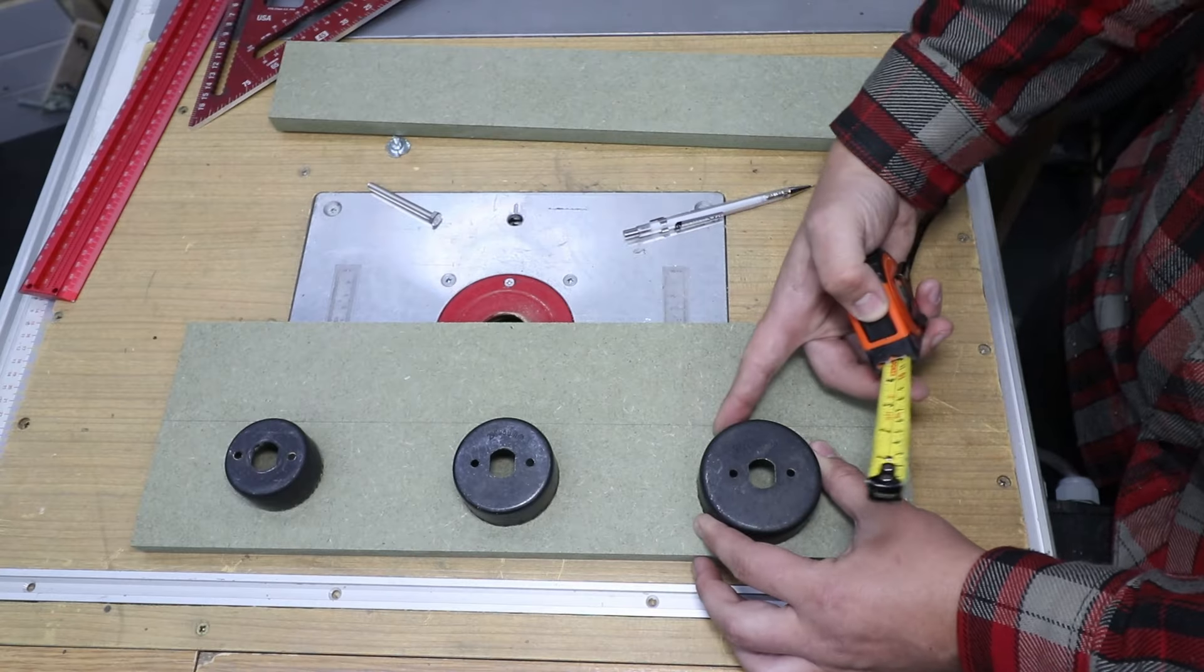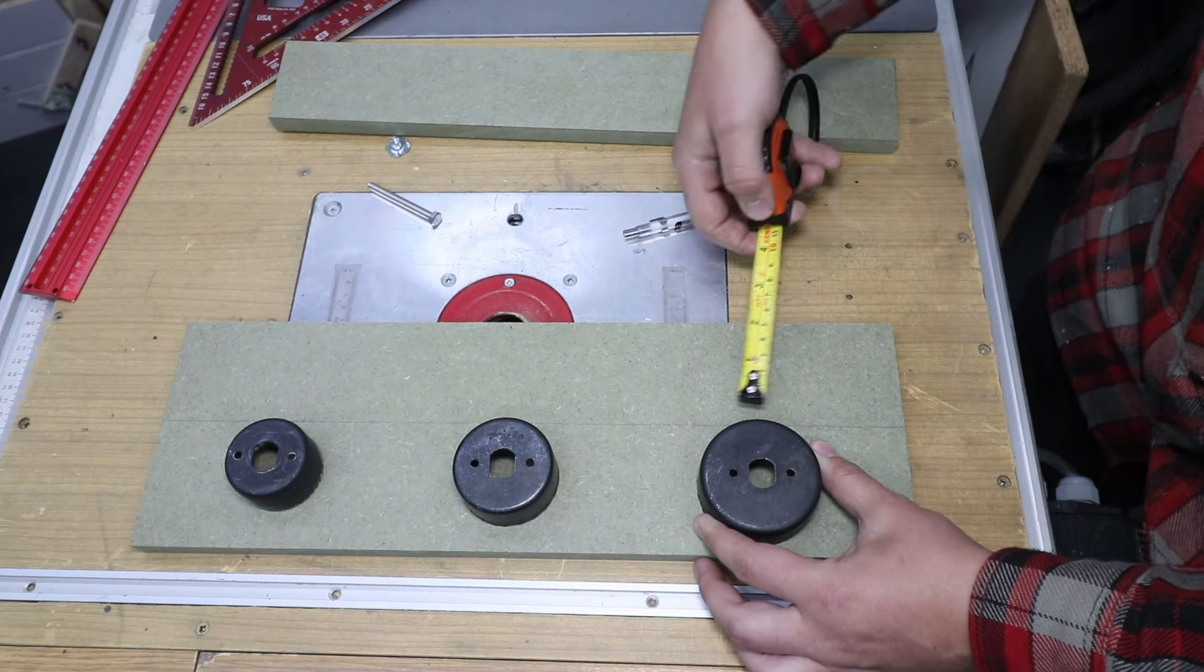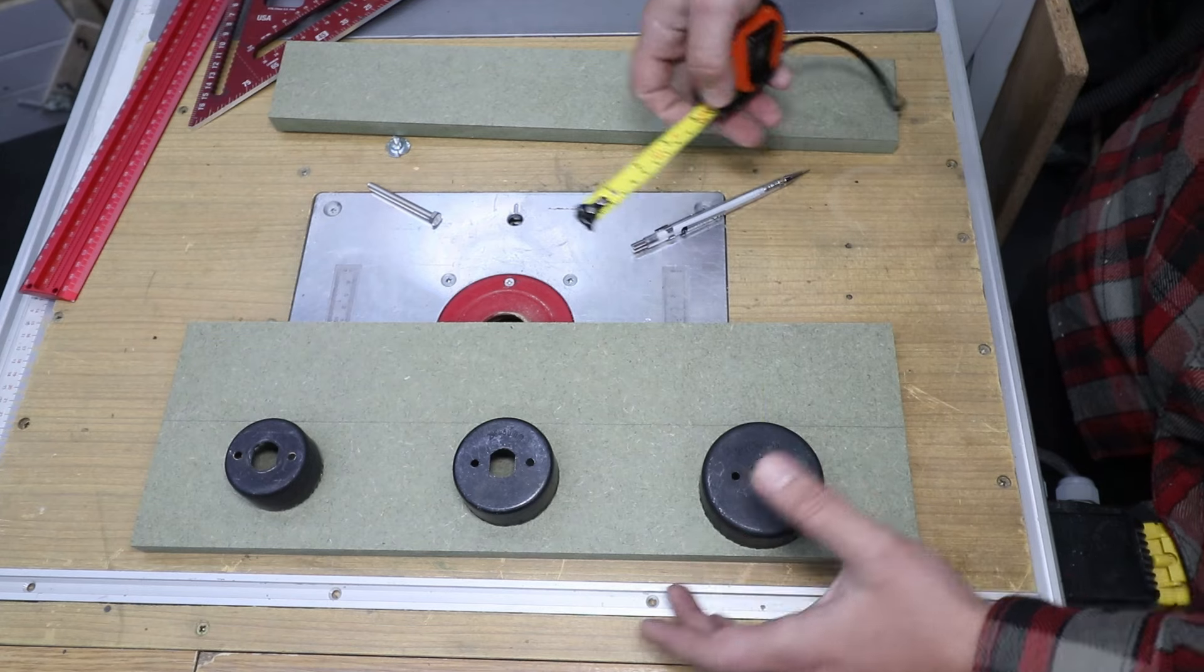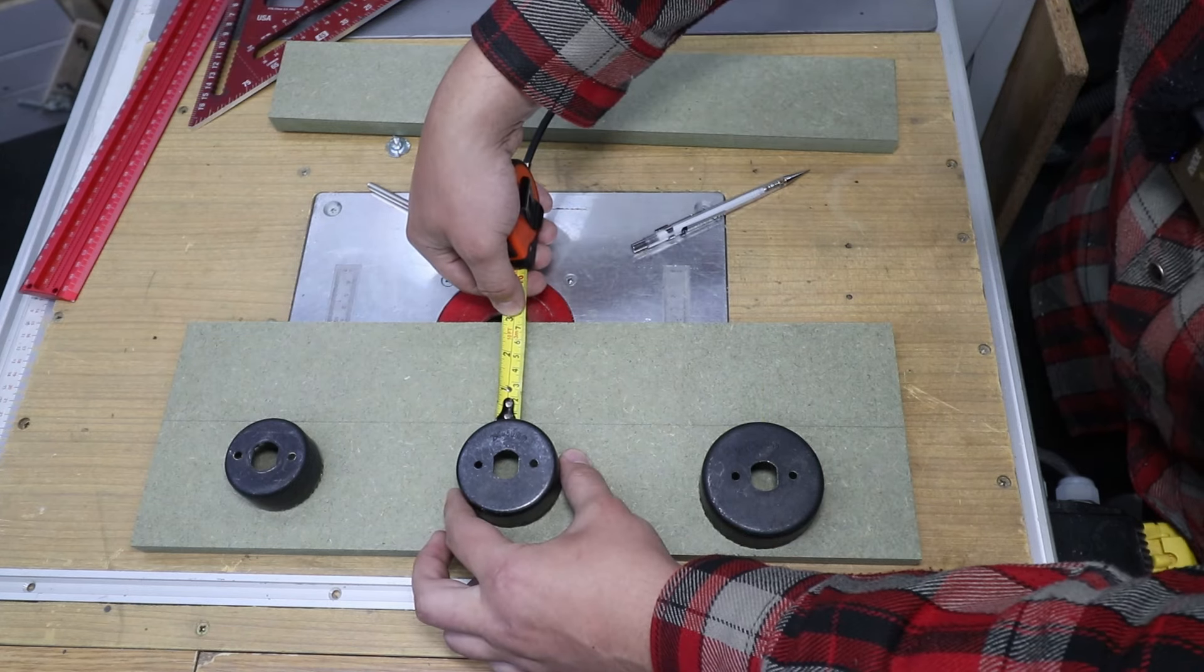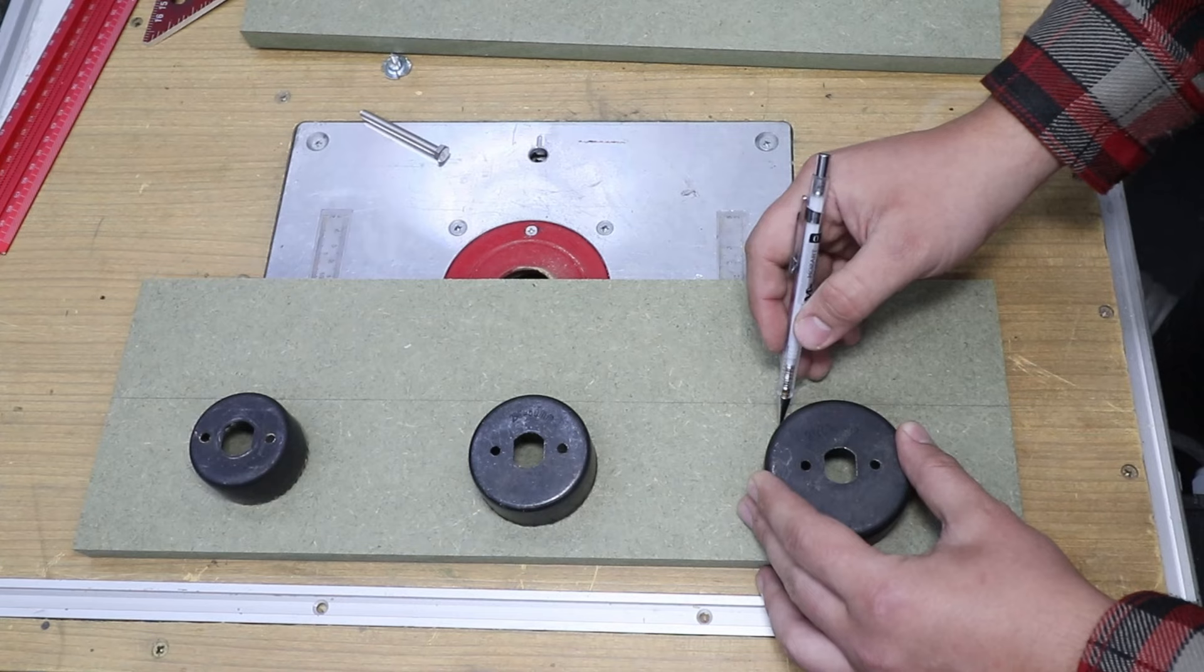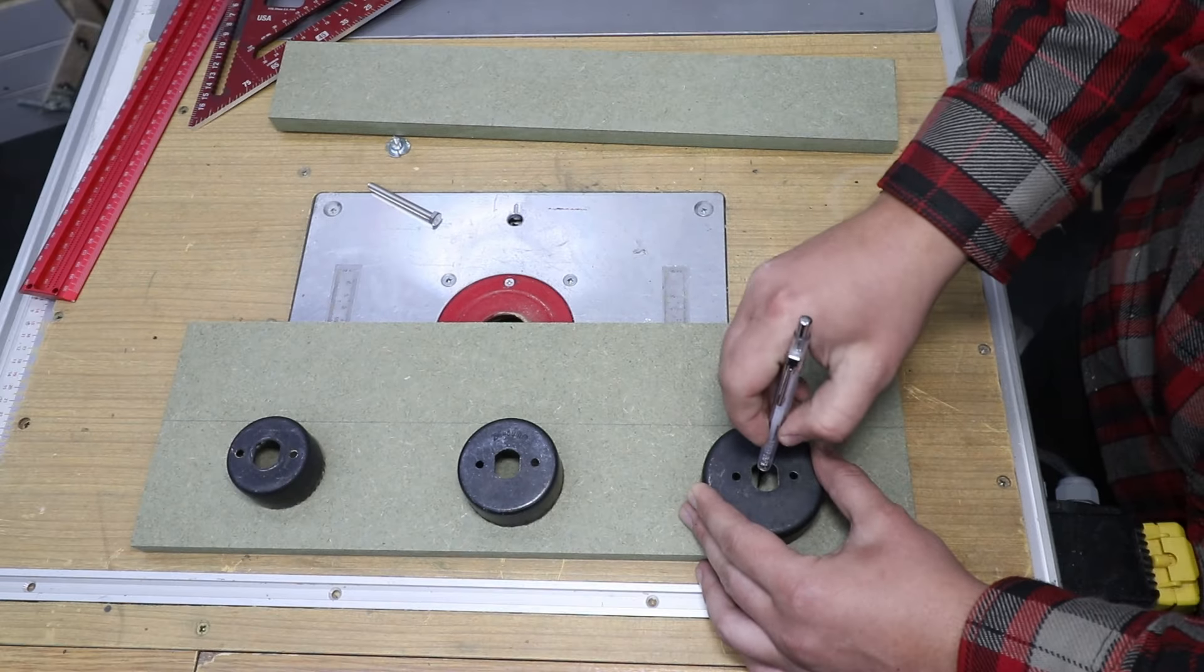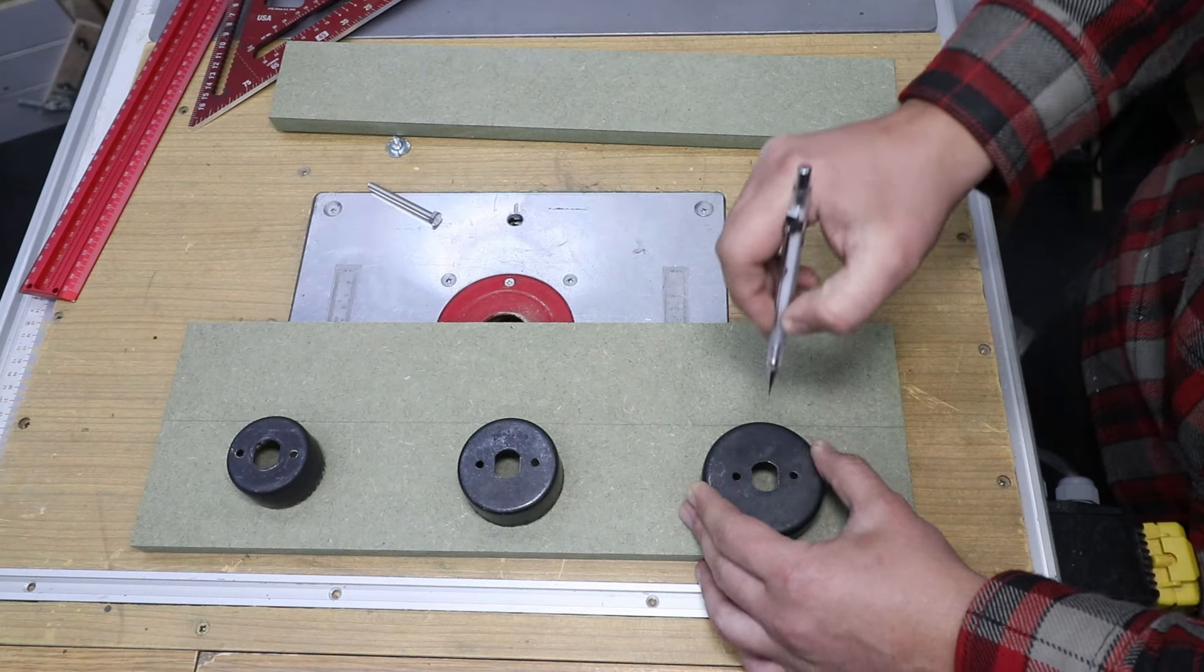The distance from the top of the hole saw to the line itself I'm going to go for about five millimeters. I'm going to mark this off and mark the middle as well.